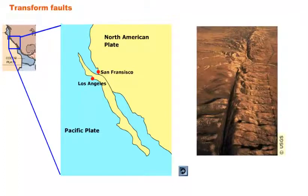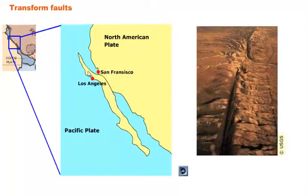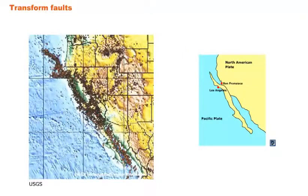The San Andreas Fault is the boundary between the Pacific Plate and the North American Plate. Los Angeles, San Francisco, and Baja California are part of the Pacific Plate, while the rest is on the North American Plate. Moving about 5 to 6 centimeters per year — which causes all the earthquakes — Los Angeles will eventually move up and be neighbors with San Francisco. Looking at earthquakes over the 20-year period, only shallow earthquakes occur here, since no subduction takes place.